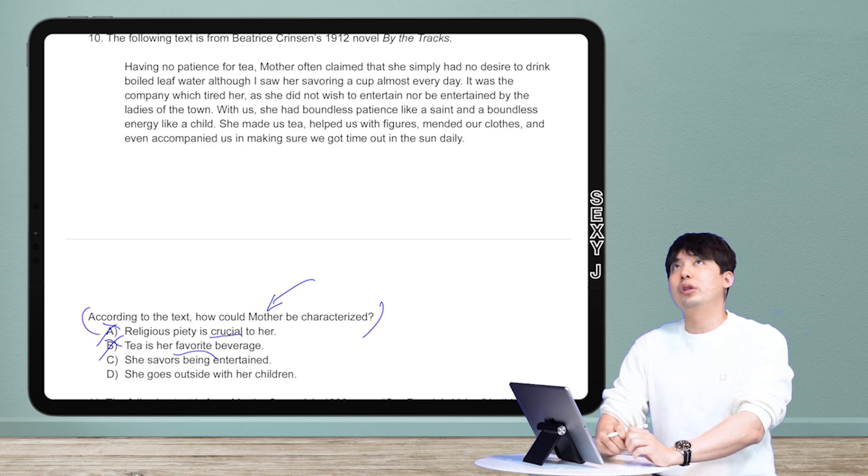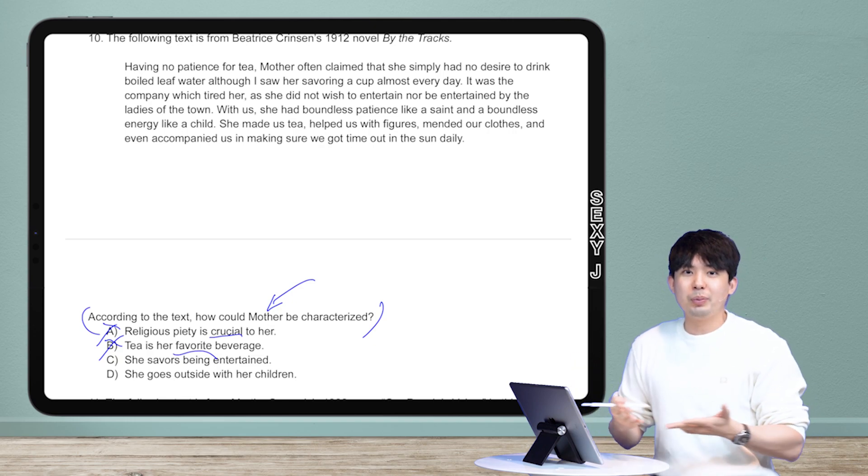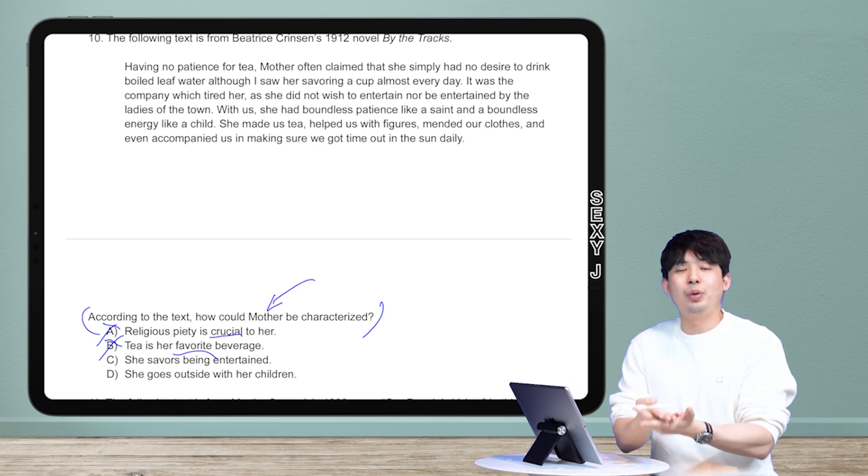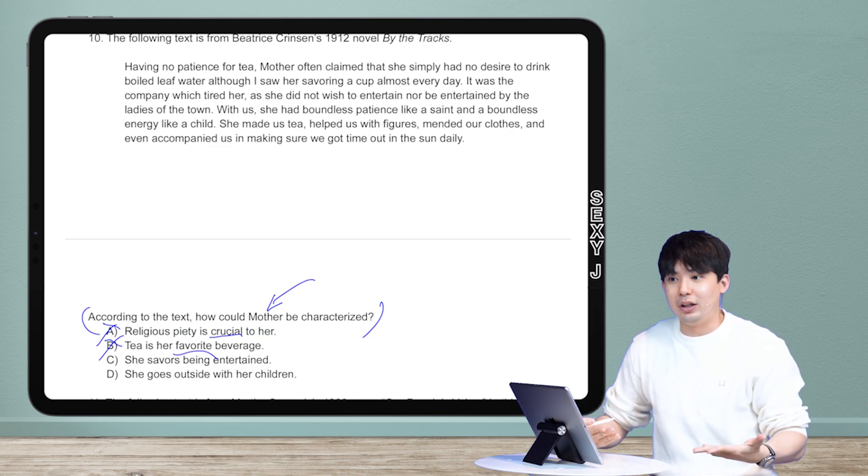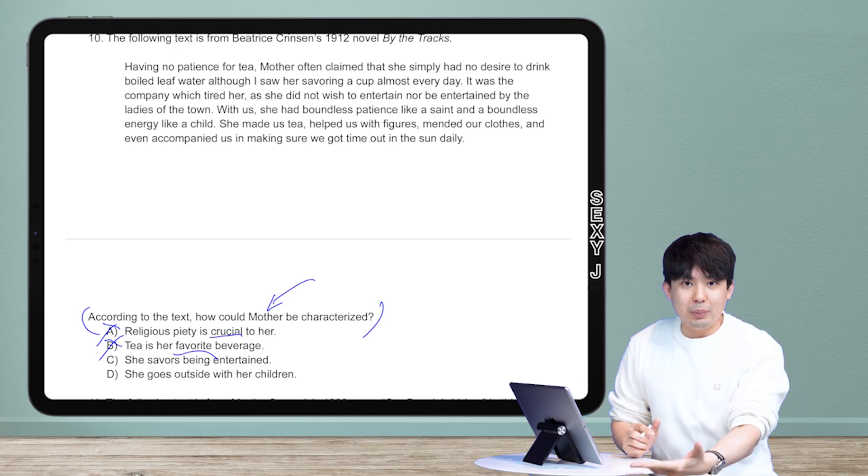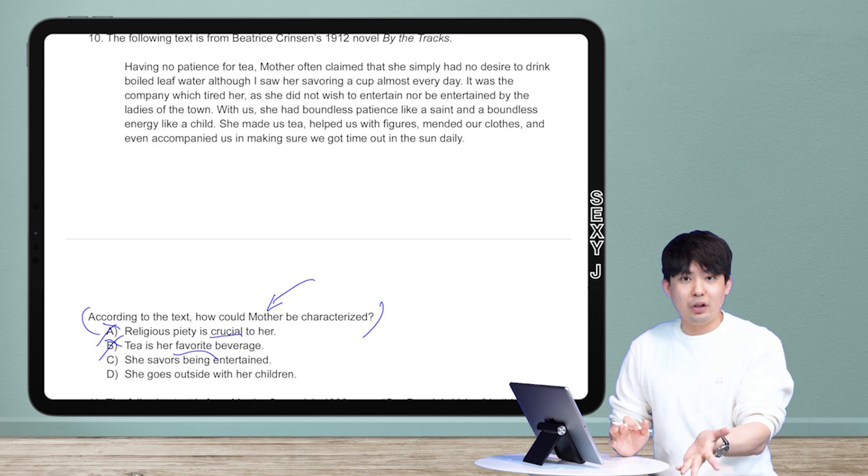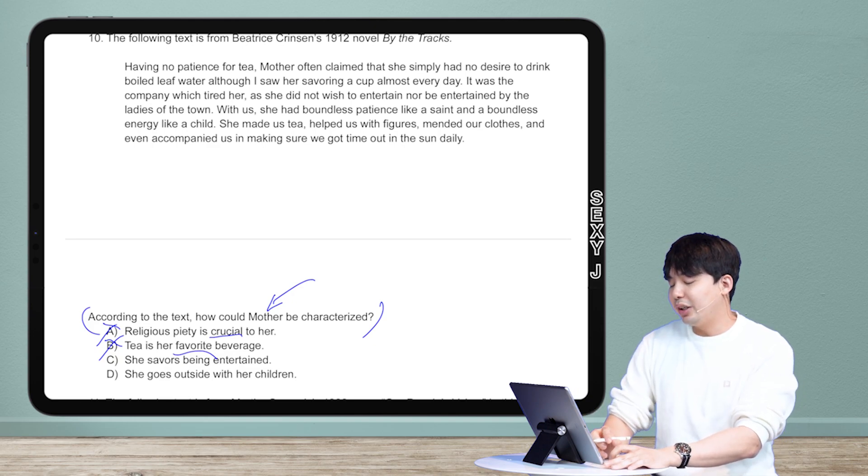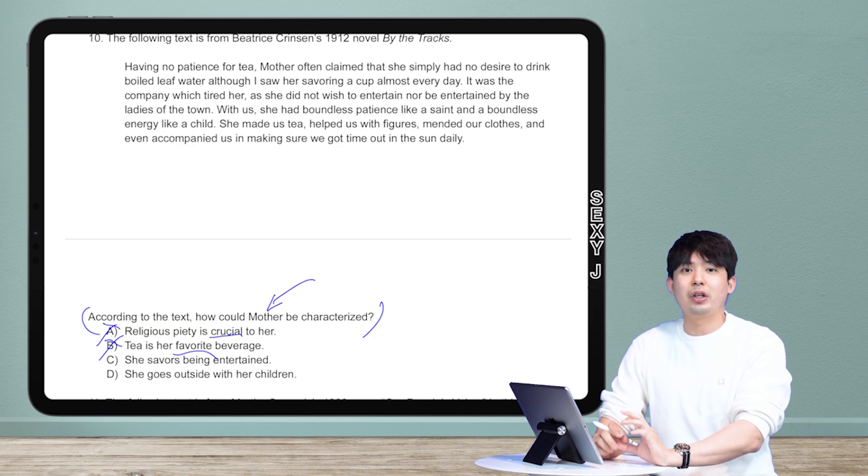This one says crucial and this one says favorite. So if it was like religious piety is important to her, maybe it could be important to a person. But what does crucial mean? It's absolutely essential, indispensable, that they cannot live without it. Would I get something that extreme as evidence on the SAT text? Pretty unlikely. And if that were the case, that should be a really easy question.